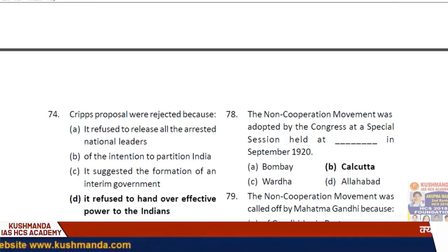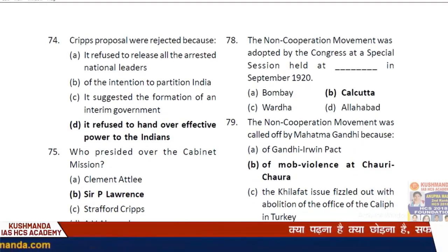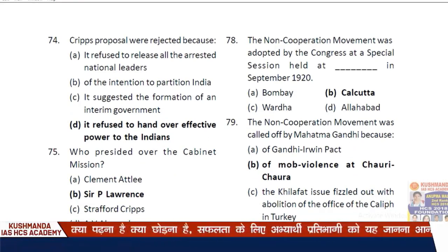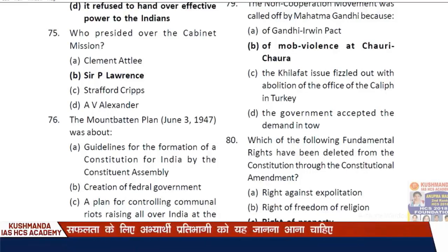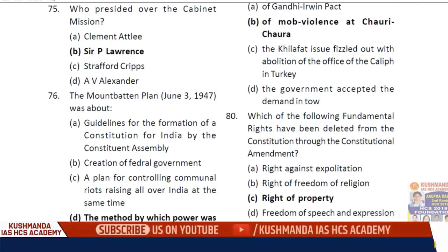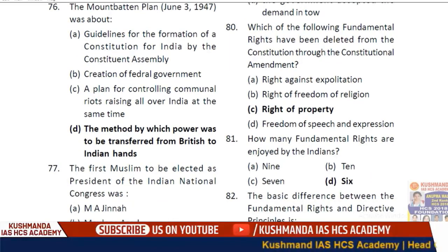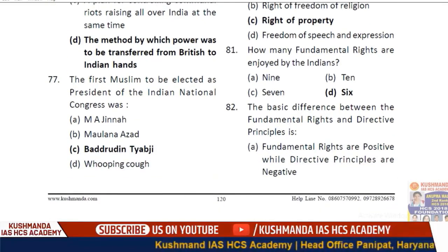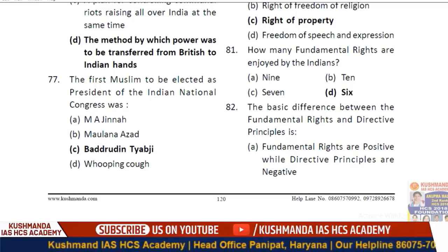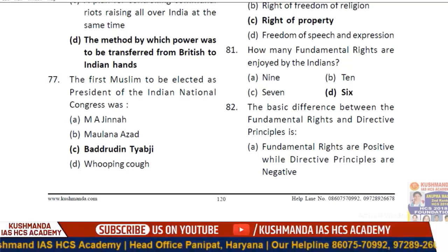Question 74: Cripps' proposals were rejected because they refused to hand over effective power to Indians. Question 75: Who presided over the Cabinet Mission? — Sir Patrick Lawrence. Question 76: The Mountbatten Plan of 3rd June was about the method by which power was to be transferred from British to Indian hands. Question 77: The first Muslim to be elected as president of the Indian National Congress was Badruddin Tyabji.